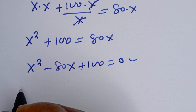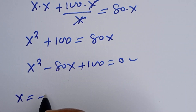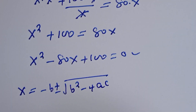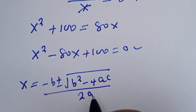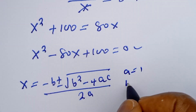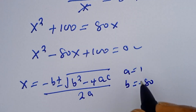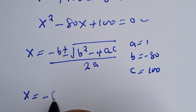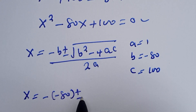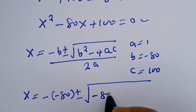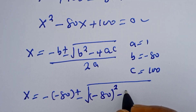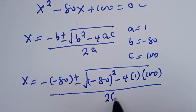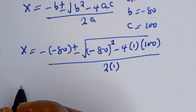This quadratic can be solved using the quadratic formula: x equals negative b plus or minus square root of b squared minus 4ac, all over 2a. From the equation x squared minus 80x plus 100 equals 0, we identify a equals 1, b equals negative 80, and c equals 100. Substituting: x equals negative of negative 80, plus or minus square root of negative 80 squared minus 4 times 1 times 100, all over 2 times 1.